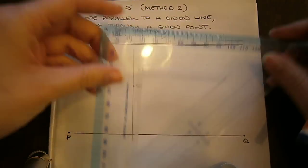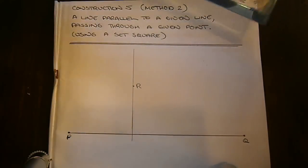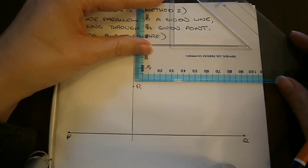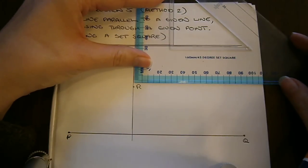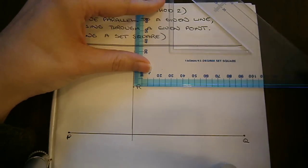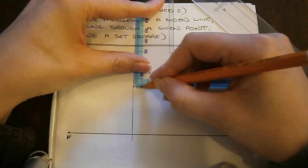We now take our set square again and we need it to line up on the line, this perpendicular line through R. We then place it on that and we slide it down so that the corner is on R.